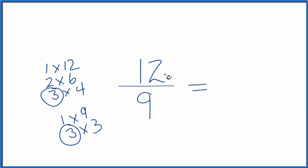I'm going to divide 12 by 3. 12 divided by 3 is 4, and then I'm going to divide 9 by 3. 9 divided by 3 is 3, and we've simplified the fraction 12 ninths down to 4 thirds.